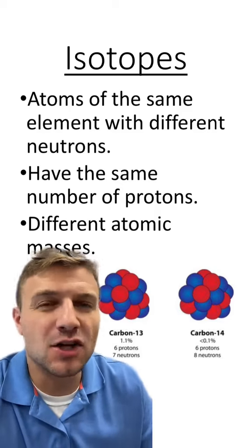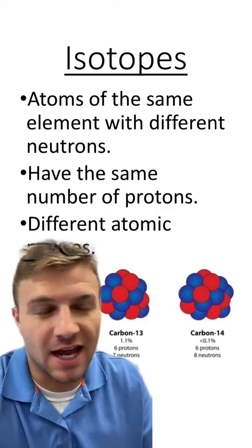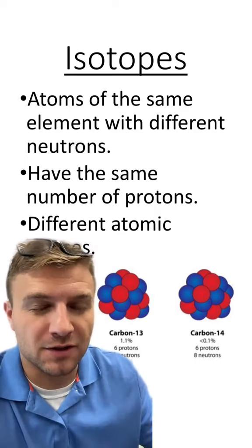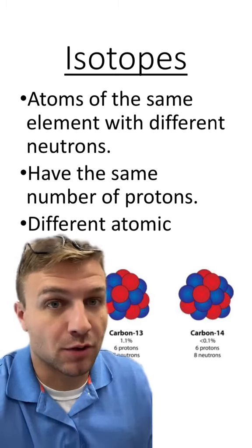Let's talk about isotopes. Isotopes are atoms of the same element that have different numbers of neutrons. Remember that all of the atoms of a particular element will have the same number of protons.